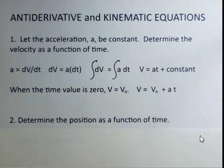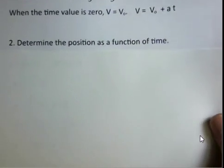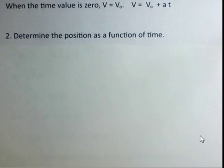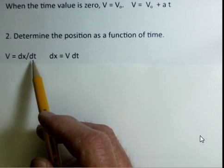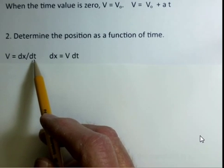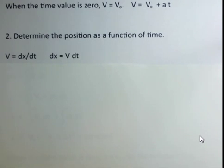What about the position as a function of time? Can the antiderivative help us determine that? And the answer, of course, is yes. So we start with the definition of velocity here. It's equal to the derivative of the position function with respect to time. And again, if I would multiply both sides by dt,